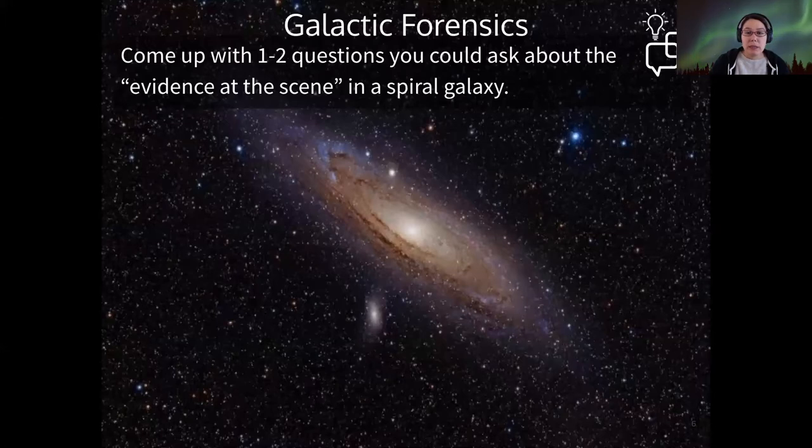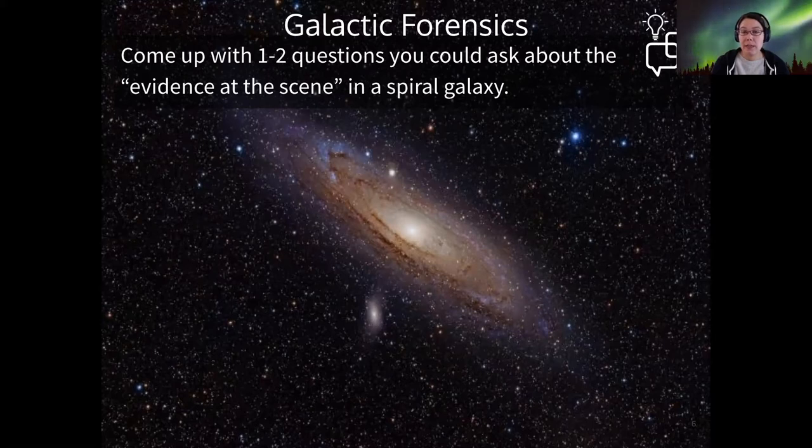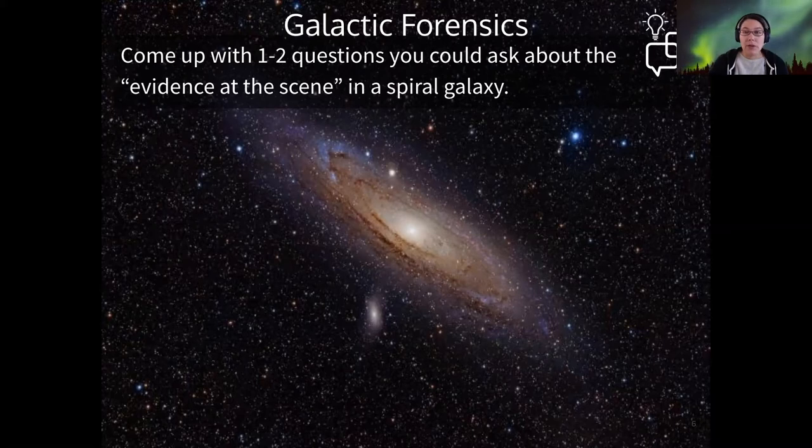All right, so I want to start with the Milky Way Formation model. And really, any model has to fit the available evidence. So when we consider what we have learned about spiral galaxies and barred spiral galaxies so far, what are some questions that you could ask about how it formed based on the evidence that we see here? I'll give you a chance to type this into the chat about a minute.